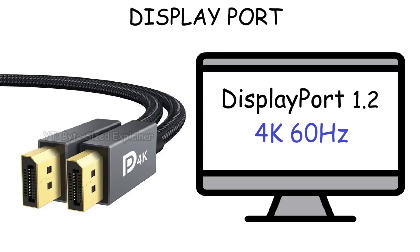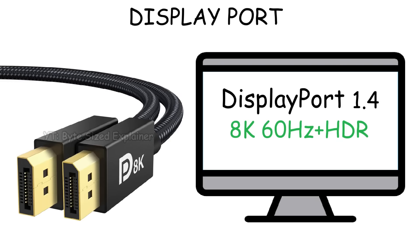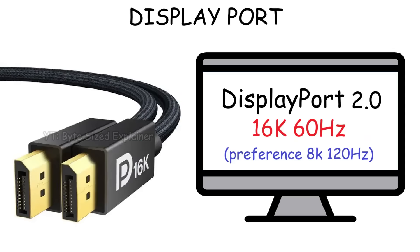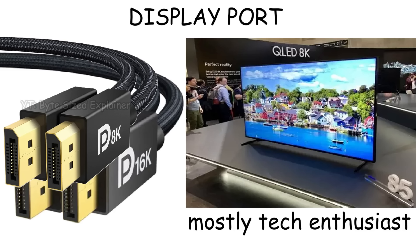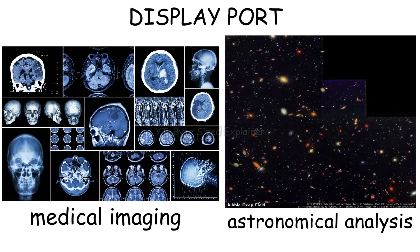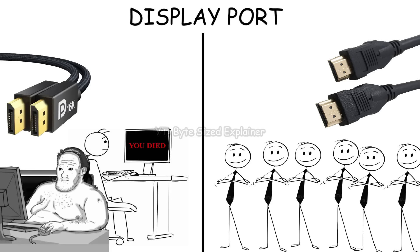DisplayPort also supports very high video quality. DisplayPort 1.2 can handle 4K at 60Hz. Then DisplayPort 1.4 pushed that to 8K at 60Hz with HDR or 4K at 120Hz. And DisplayPort 2.0 even supports resolutions up to 16K, though in practice it's mainly used for 8K at 120Hz. But this is a bit overkill for most people — DisplayPort, especially versions supporting 8K or 16K, mostly exists in the PC enthusiast world or very specific fields like medical imaging or analyzing astronomical data. So most people still stick with HDMI because it's the common standard.